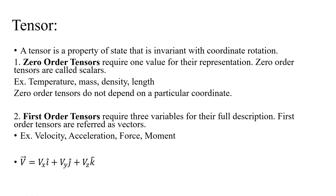The next order of tensor is first order tensors. They require three values for their full description. We refer to first order tensors as vectors. Examples of vectors include velocity, acceleration, force, and moment. A vector has three components in the x, y, and z directions in a three-dimensional Cartesian coordinate.